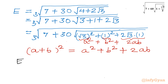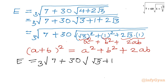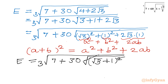Applying this identity, expression E equals cube root of 7 plus 30 times square root of root 3 plus 1 whole squared. Now you can see the square inside the square root, so we can immediately cancel the square root with the square. After that we get cube root of 7 plus 30 times (root 3 plus 1).